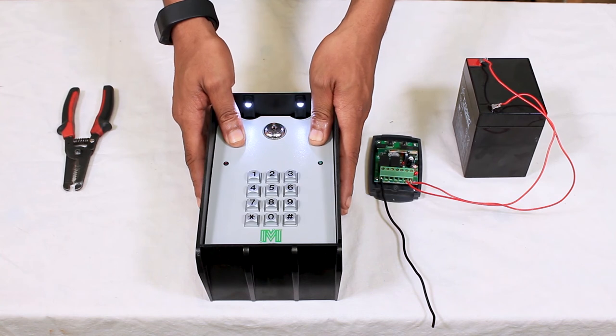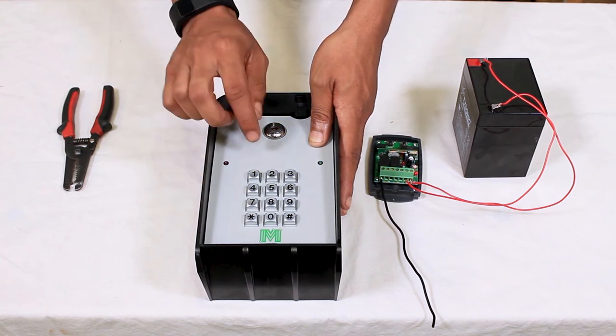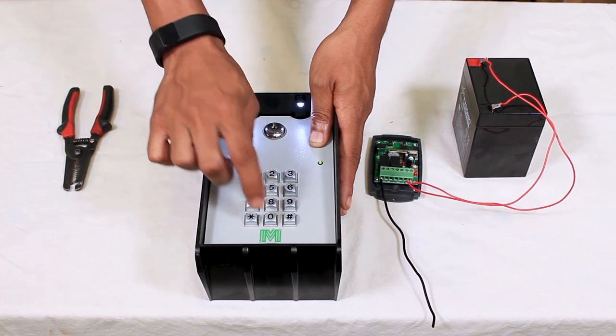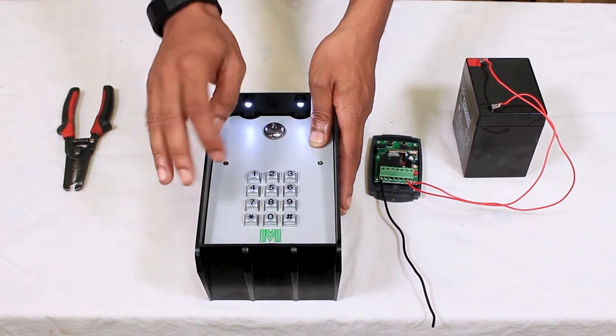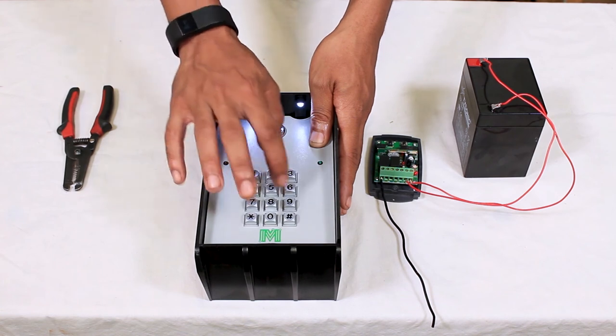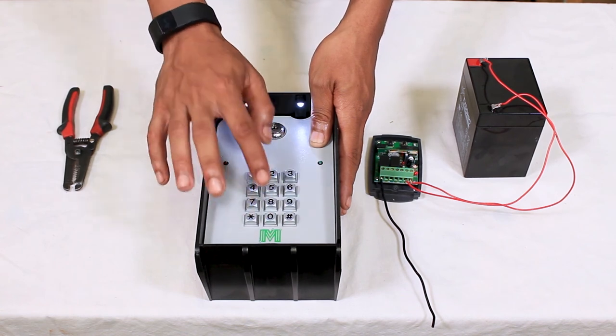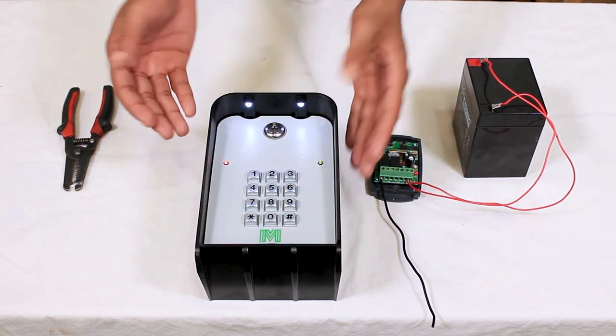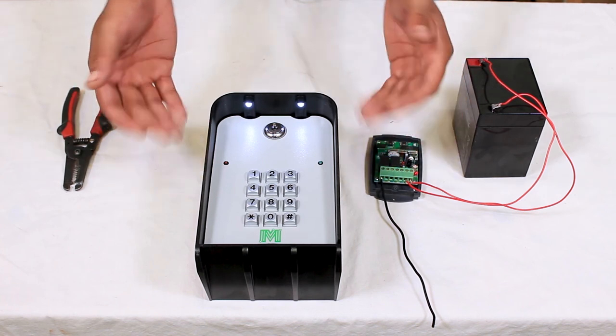Next we're going to program that factory sample entry code. So first thing you want to do is always enter the master code before any type of programming, which is 2580. Next we'll hit one and then pound. Then the entry code which is 1934. And then we'll finish it off by hitting pound. We got the indicators once again and we know that it took the code.